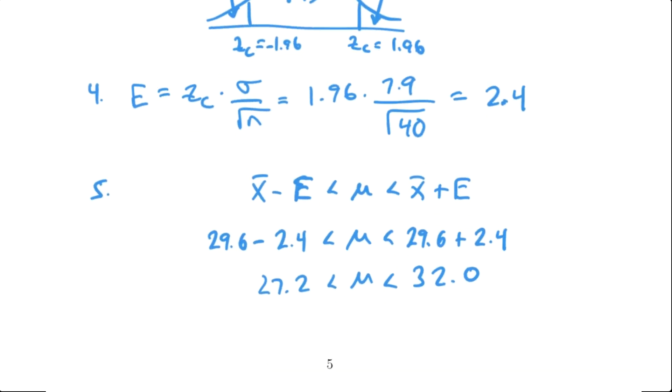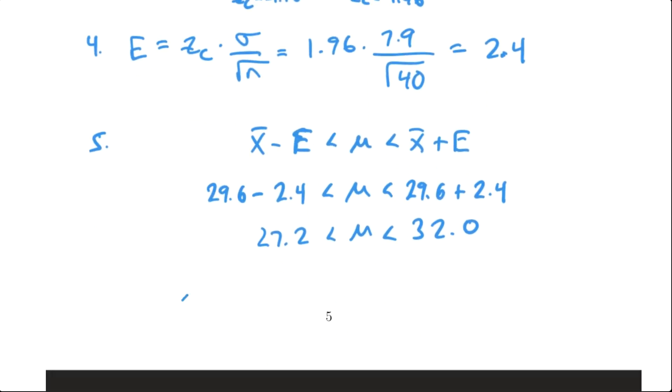So visually what's happening here is on a number line we have the population mean, which again I don't know what it is, but I do know but I just calculated that there is a 95 percent chance that my population mean is in this interval somewhere. Again the center of this is the sample mean.